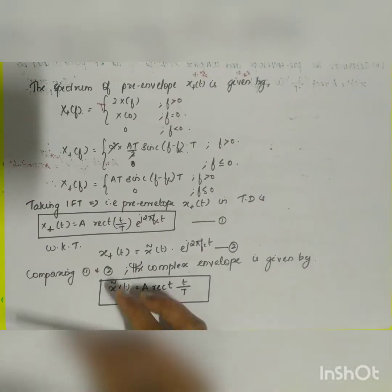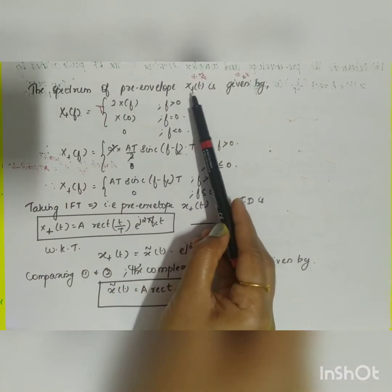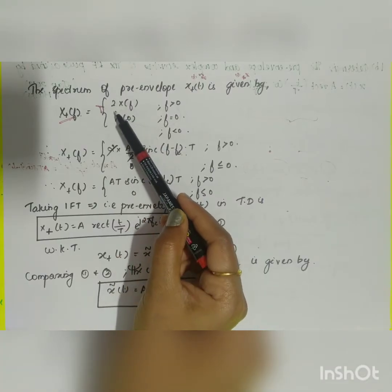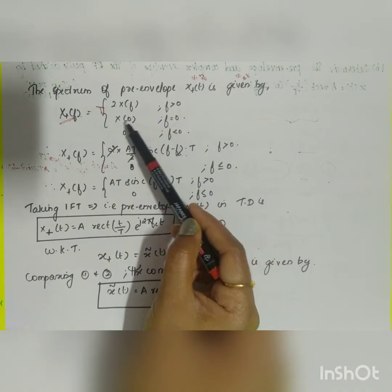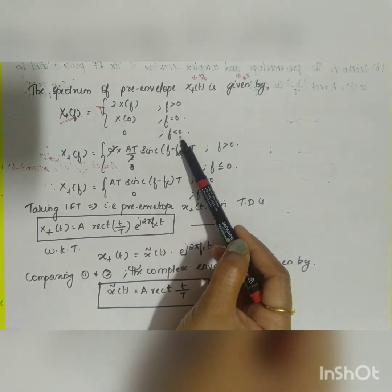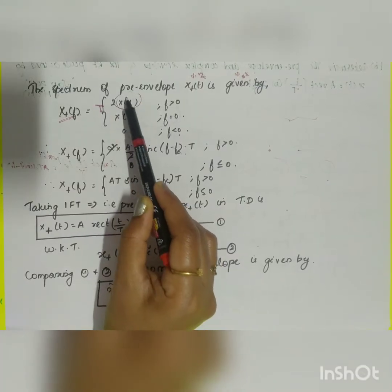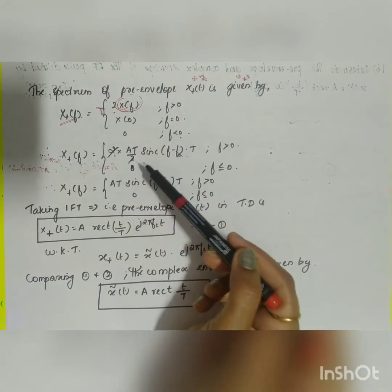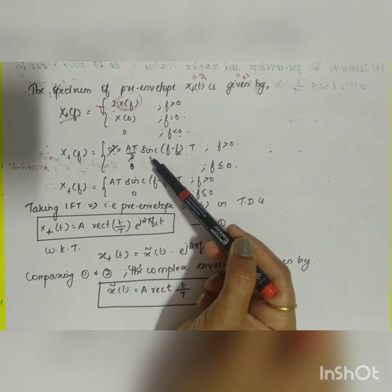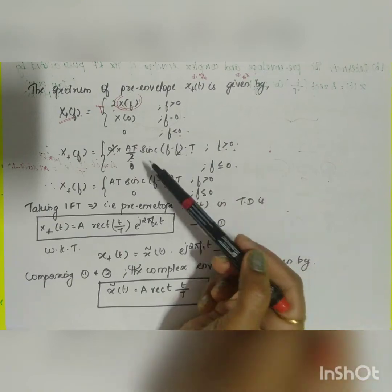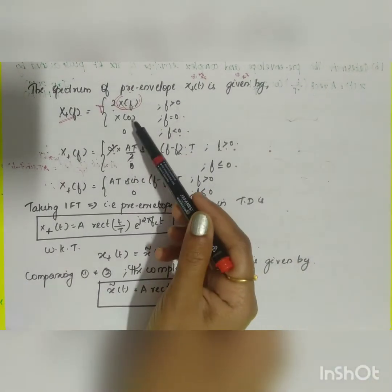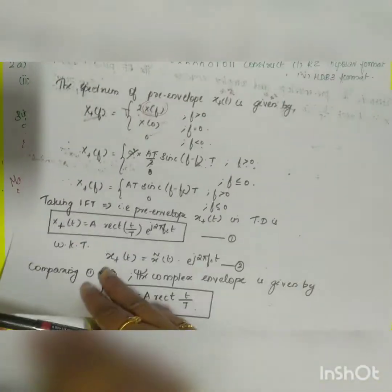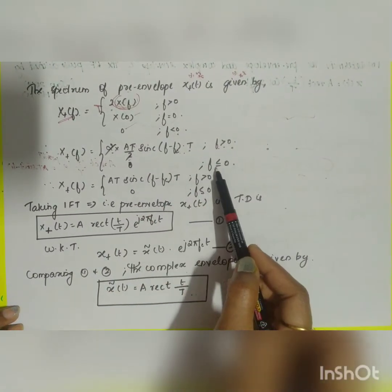The spectrum of the pre-envelope X⁺(f) is given by the general formula: 2·X(f) for f > 0, X(0) for f = 0, and 0 for f < 0. Substituting our X(f): X⁺(f) = 2·(AT/2)·sinc((f − fc)·T) for f > 0. For f = 0, our X(f) was 0, and for f < 0 the value is also 0, so X⁺(f) = 0 for f ≤ 0.